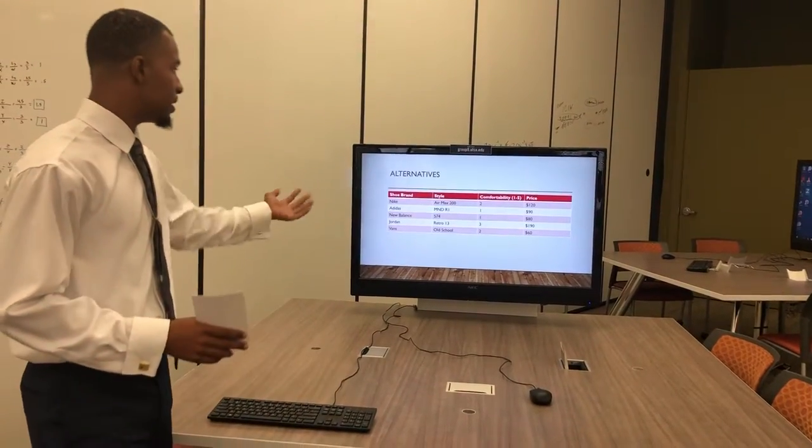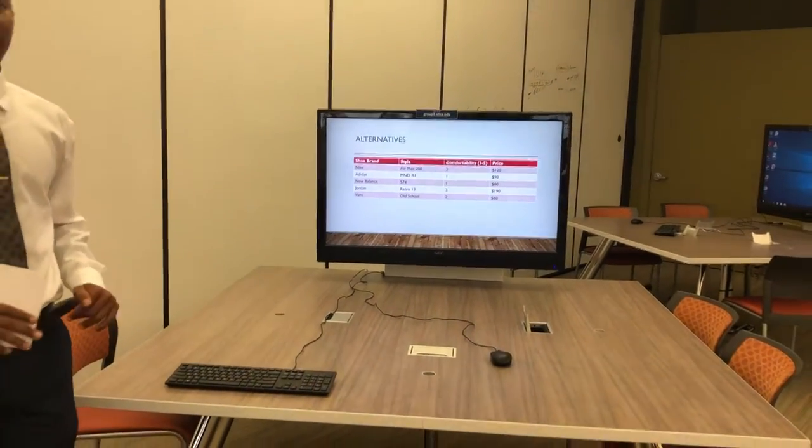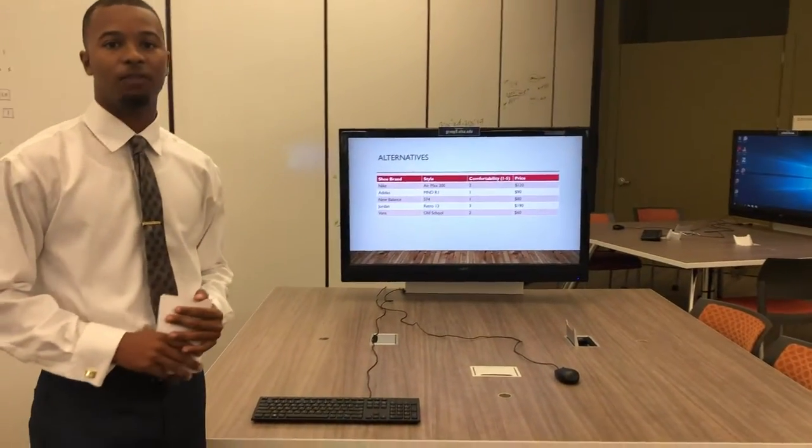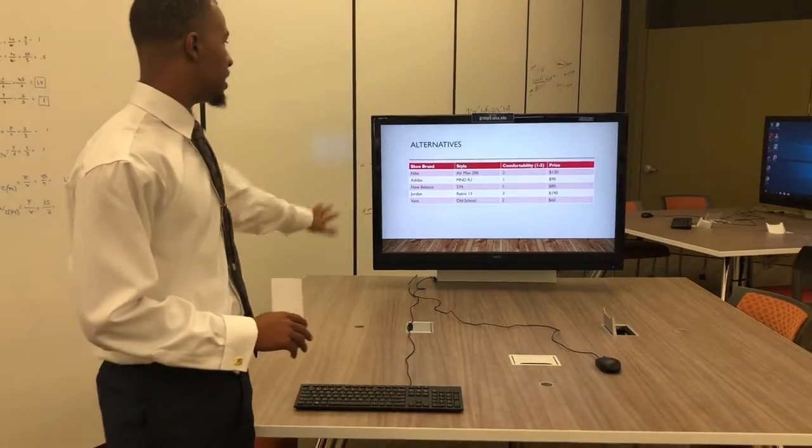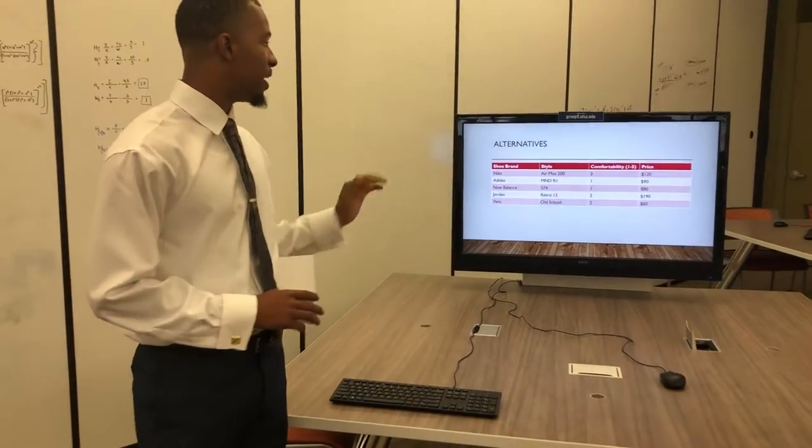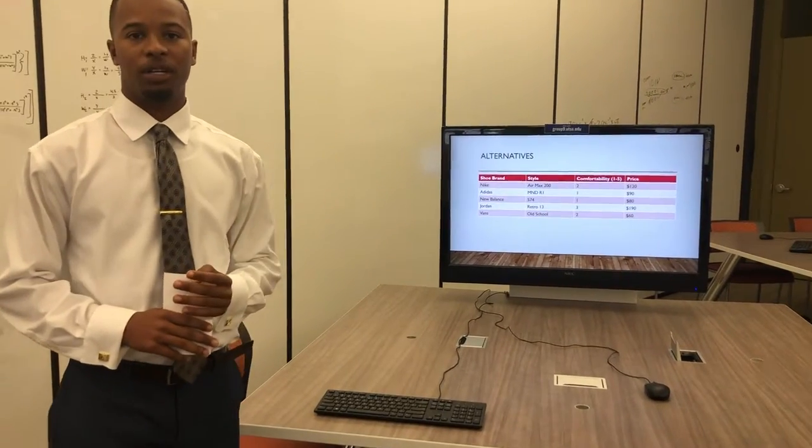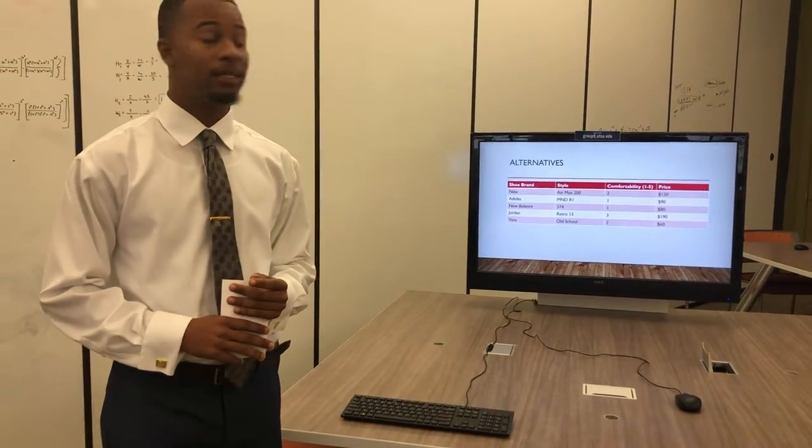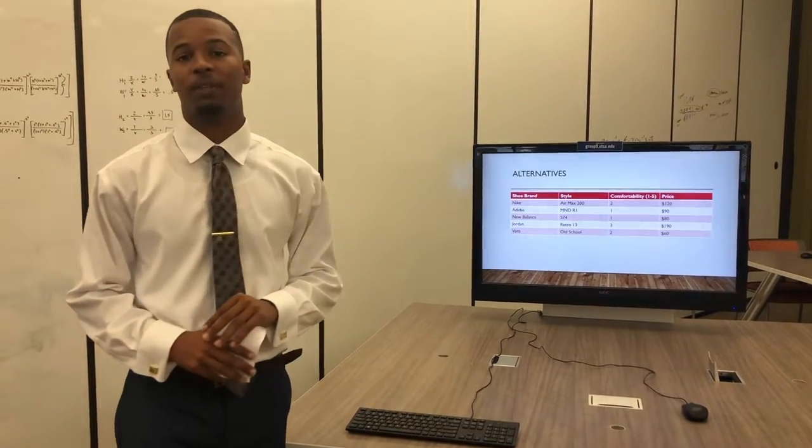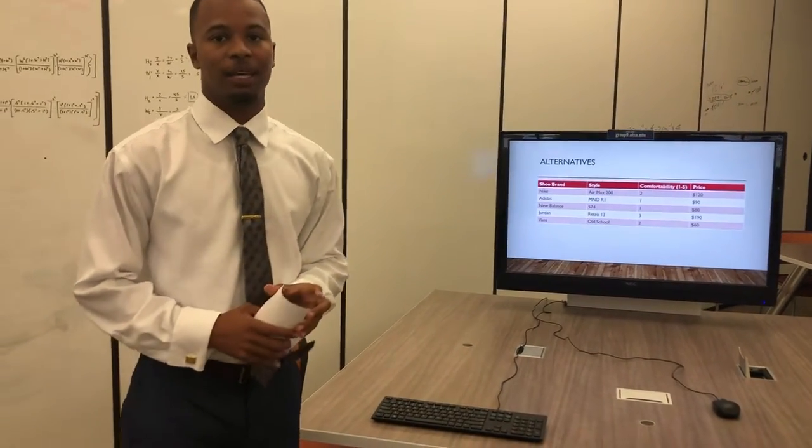If we look at this diagram right here, we have the Air Max 200s for Nike, we have the NMD R1s for Adidas, we have the 574s for New Balance, and we have the Retro 13s for Jordans, and we have the old school Vans.